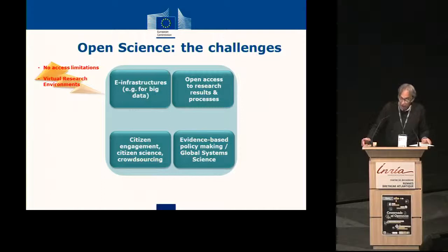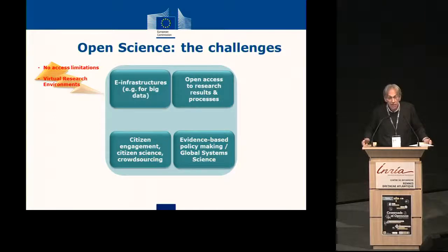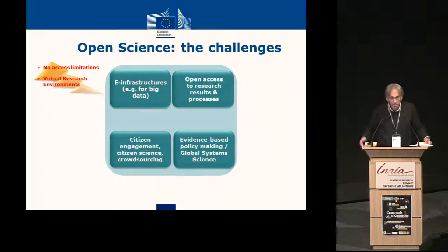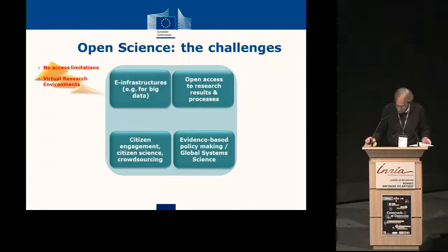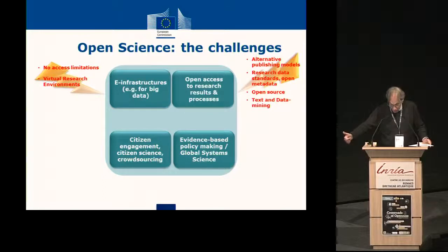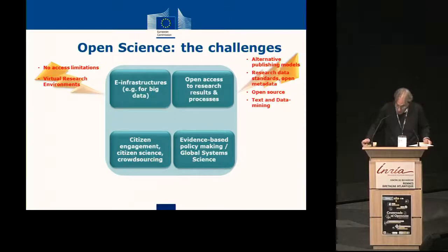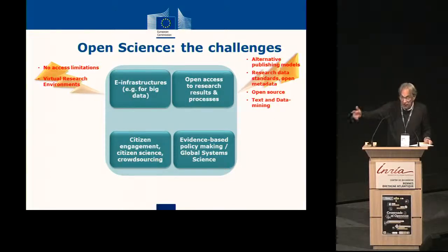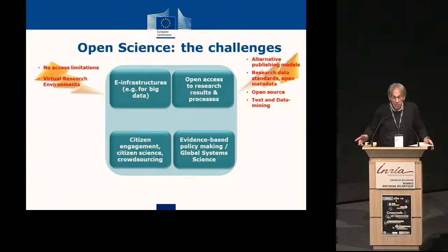When we come back to the challenges, with regard to infrastructures, the challenges are: no limitations of access by discipline, by nationality, or by whatever — and what we call virtual research environments, which are ways of having scientists collaborate without being physically together. On open access, we have open access to publications — looking at alternative publishing models — open access to scientific data and metadata, open source as the next step (open access to algorithms, methods, and tools), and a dimension of text and data mining, which is linked to our policy on copyright.